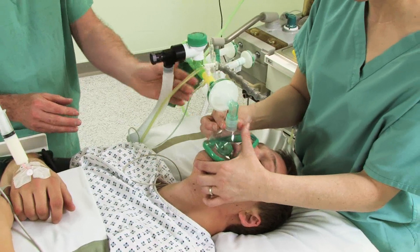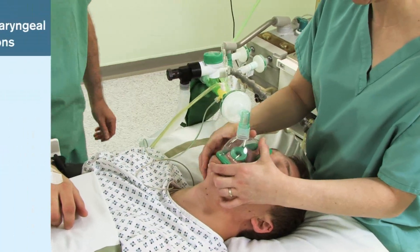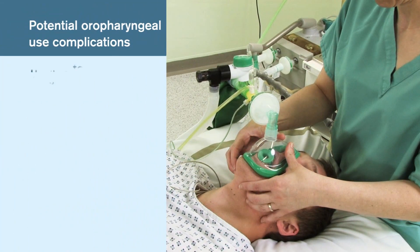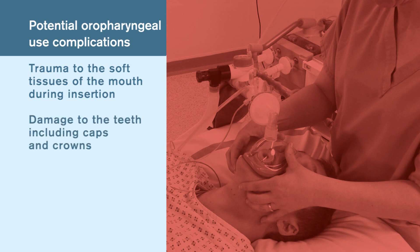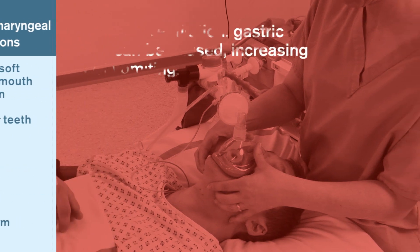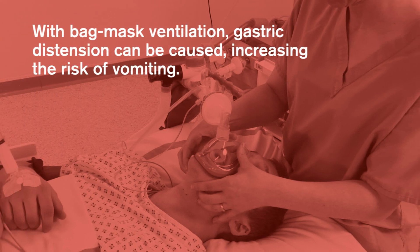Potential complications with the use of oral pharyngeal airways include trauma to the soft tissues of the mouth during insertion, damage to the teeth including caps and crowns, vomiting, gagging and laryngeal spasm. With bag mask ventilation, gastric distension can be caused, increasing the risk of vomiting.